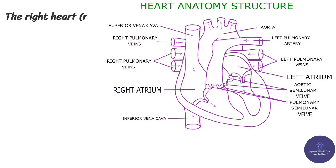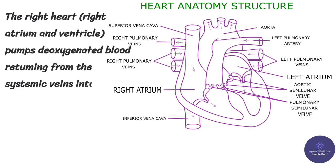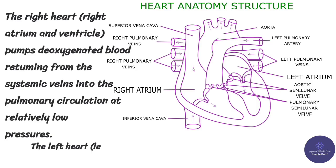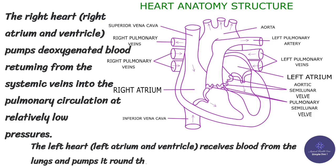The right heart — right atrium and ventricle — pumps deoxygenated blood returning from the systemic veins into the pulmonary circulation at relatively low pressures. The left heart — left atrium and ventricle — receives blood from the lungs and pumps it round the body to the tissues at higher pressures.